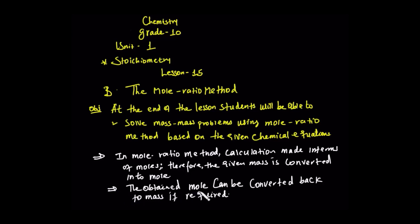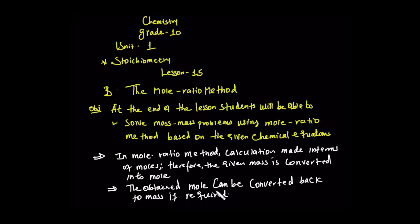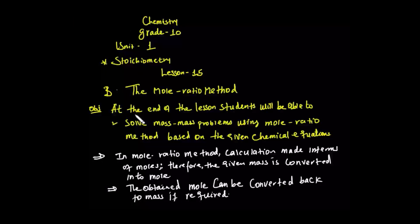The moles can be converted back to mass if required. So the first step is to get the mole ratio method. The steps are to get the mole ratio method step by step. So what are the steps we follow in order to calculate the mole ratio method?